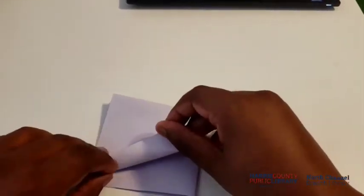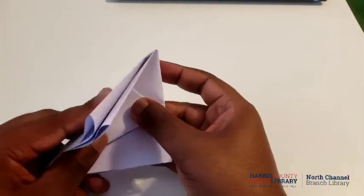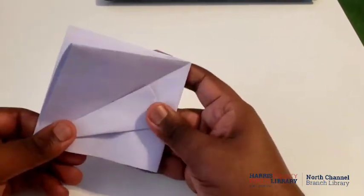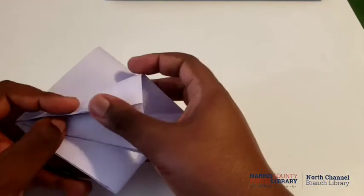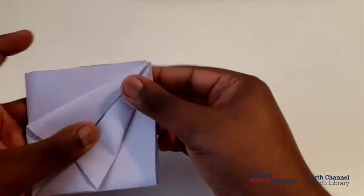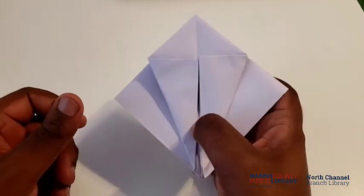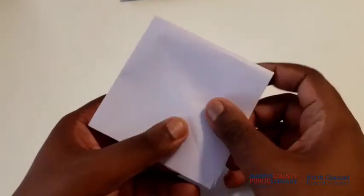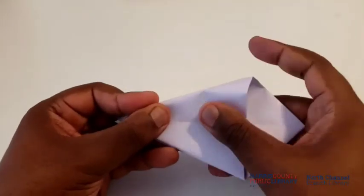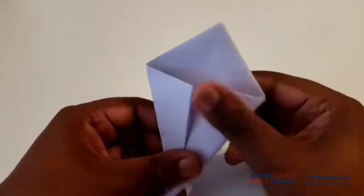We're going to bring up the outer edges from one side inside, make sure to get it nice and creased and folded just like this. Smooth it out a little bit. Then we're gonna flip it over and do the same thing to the other side.